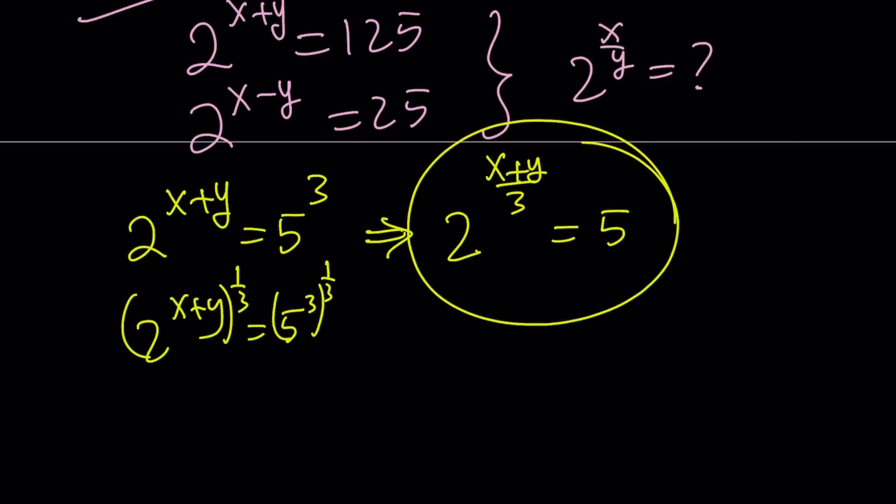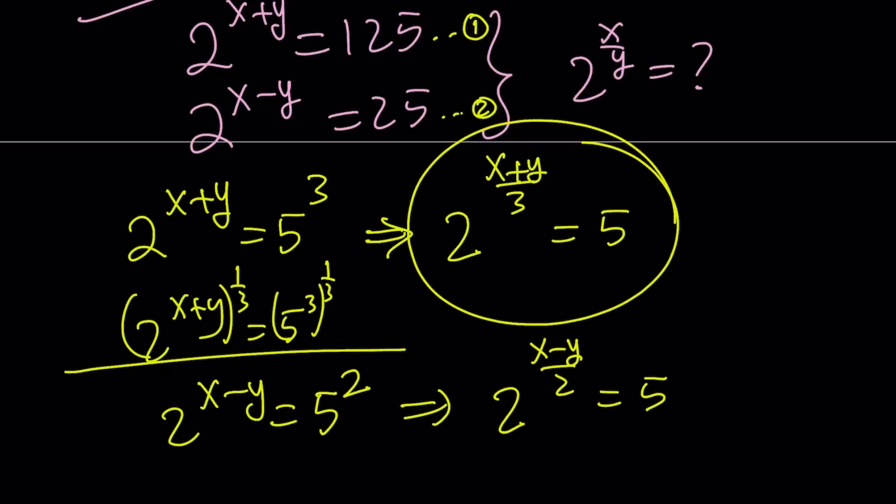Take the second equation. Let's do the same thing. 2 to the power of x minus y equals 5 to the second. Let's raise both sides to the power of 1 half. That's going to give me 2 to the power of x minus y over 2 equals 5. You might be arguing, when you take the square root, doesn't that become a negative? It could, but if you set this equal to a negative 5, you're going to have an issue because you have a positive base. The result cannot be negative in the real world.